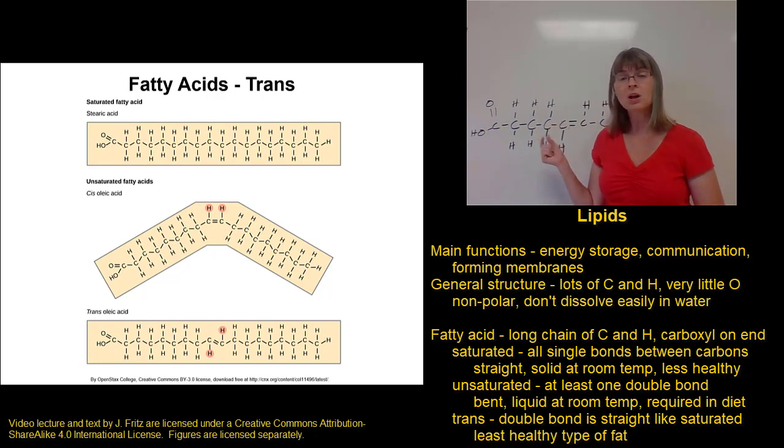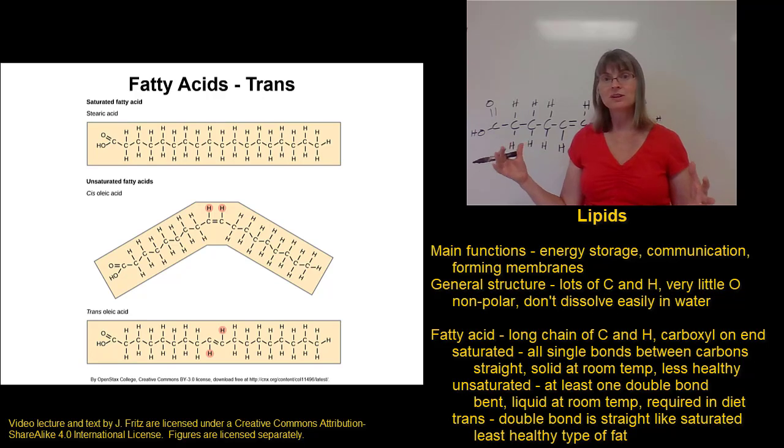Trans fatty acids occur in small amounts naturally in meat and dairy, but we typically find them in manufactured foods. A lot of manufactured foods go through a process called hydrogenation, where you start with an unsaturated fatty acid and you hydrogenate it or add hydrogens to it, and that causes a lot of fatty acids to become trans fatty acids. That's one of the reasons why avoiding manufactured foods or foods containing hydrogenated or partially hydrogenated oils is typically considered to be a good idea.